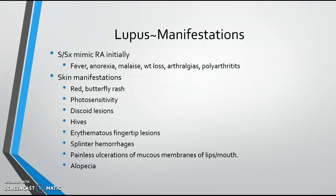Lupus and rheumatoid arthritis are often presented side by side because symptoms mimic RA initially. It's the body having an immune response — you get a low-grade fever, anorexia, fatigue, weight loss, achy joints, and muscle pain. Generally you'd write that off as coming down with something, feeling kind of flu-like.